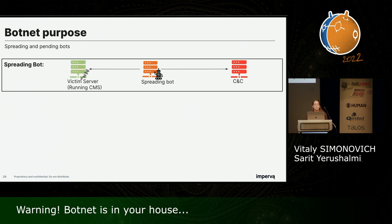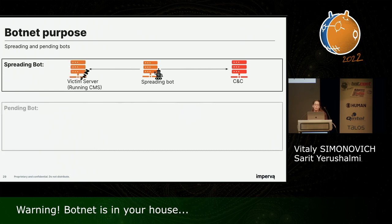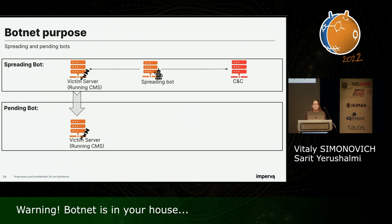The other two purposes relate to the mission of newly added bots. A victim server attacked by a spreading bot is added to the botnet as a spreading bot itself — it constantly communicates with the C&C to receive attack instructions, telling it who to attack and how, and is used to infect new machines. Alternatively, a victim can become a pending bot — a site that was attacked and now sits idle, waiting for the botmaster to approach and change its purpose. It doesn't initiate communication with the C&C. Since the attacker has remote code execution and file upload capabilities, he can essentially do whatever he wants.